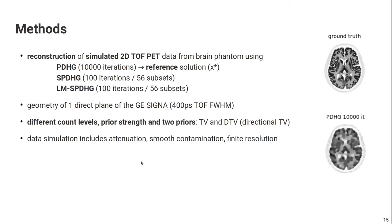Knowing that every update in list-mode SPDHG is faster and also more memory efficient compared to the sinogram version, we wanted to show that LM-SPDHG actually has the same convergence properties. We did that in 2D with simulated data based on a brain phantom. And the scanner geometry mimics one direct plane of the GE Signa, so that's a scanner with 400 picoseconds. And we have done different reconstructions. So first of all, we did a reference reconstruction, a reconstruction without subsets and very long iterations. So that's PDHG reconstruction using 10,000 iterations. And of course, you can do it in 3D, but it will take forever. So that's why we did those tests in 2D.